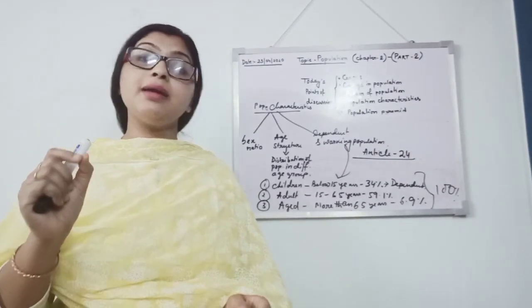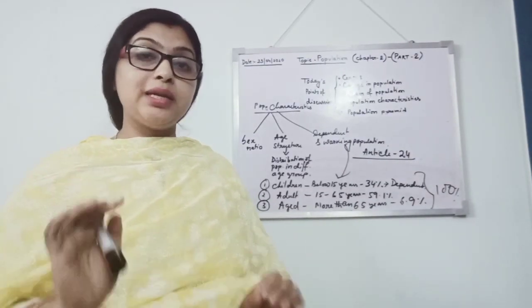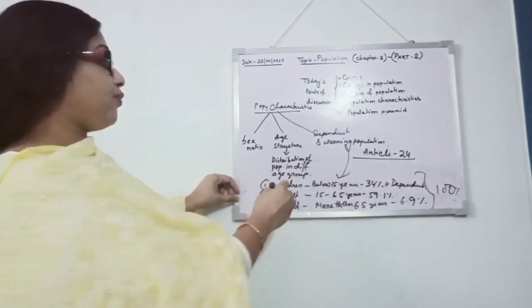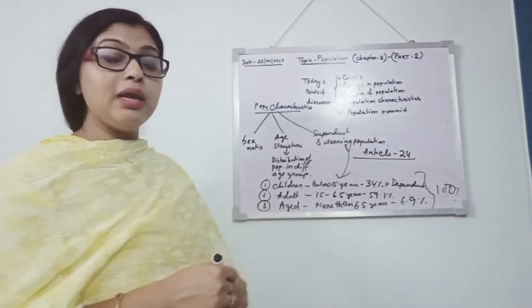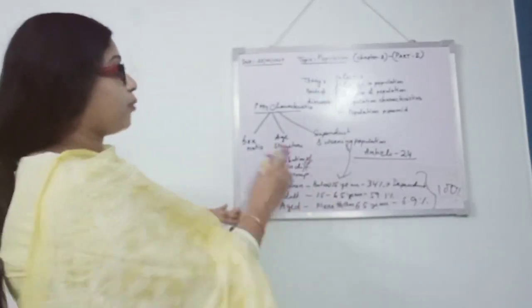So here this age group is known as partially independent. How this different age group is categorized in dependent and working population.